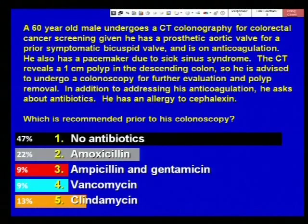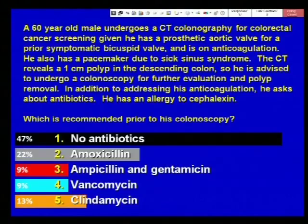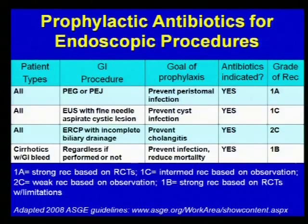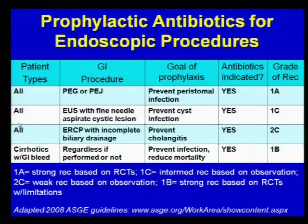These first four cases are really about doing no harm and being cost-effective. In this case, no antibiotics are indicated either for his valve or his pacemaker. Looking at prophylactic antibiotics for endoscopic procedures — adapted from the ASGE guidelines from 2008, which really haven't changed — you have to look at both the patient type and the procedure planned. It's really more dependent on the type of procedure than the patient themselves.